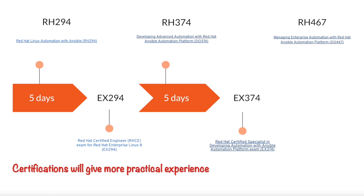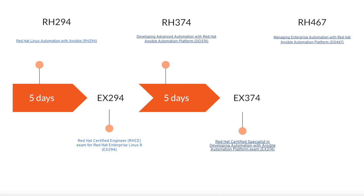The last course, which is a new launch by Red Hat, is called Managing Enterprise Automation with Red Hat Ansible Automation Platform. This is a newly launched course completely based on Ansible Automation Platform version 2.2, and it teaches you how you should configure your AAP environment into an enterprise environment. This again would take somewhere around five days. This is the learning path which I took for my Ansible journey.